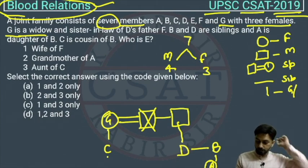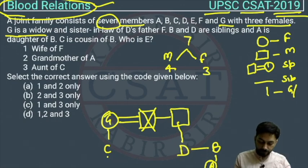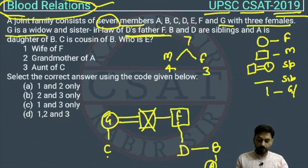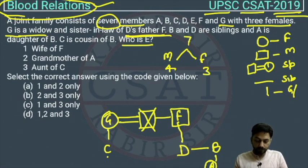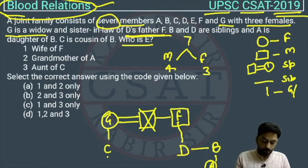D's father is F — it's given here, maybe we missed it — so F will come here. Now E is the remaining member to be placed in this figure. They are asking who is E. E is the wife of F, so E can come here.